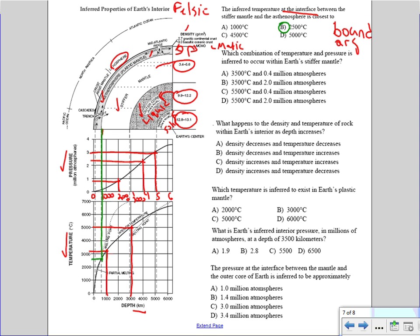Which combination of temperature and pressure is expected to occur within the earth's stiffer mantle? The key term is 'within,' so you estimate somewhere in the middle of that layer. Going down to the pressure gives less than 1 million atmospheres, and the temperature is about 4,000 degrees Celsius. The best choice is choice A: about 3,500 degrees Celsius and about 0.4 million atmospheres. Be careful when they use 'within.'